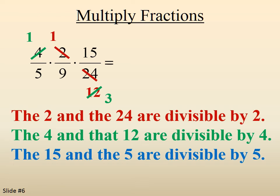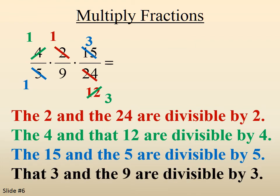And then we see that the 5 and the 15 are both divisible by 5. So that puts a 3 on the top and a 1 on the bottom. And then we notice that the 3 and the 9 are both divisible by 3.